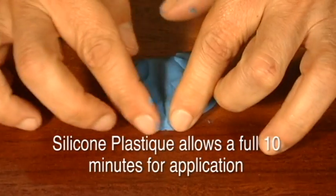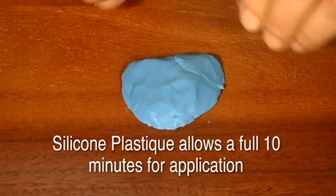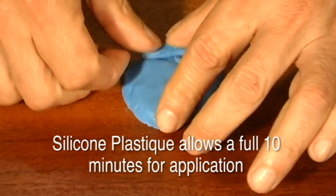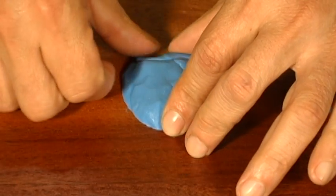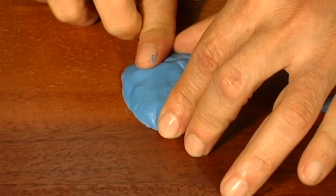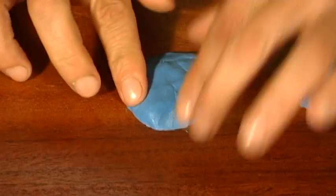Silicone plastique, however, has been designed to give a full 10 minutes for application which ensures that a better mold will be made without rushing through the mold making process.